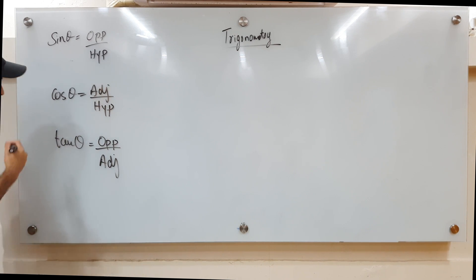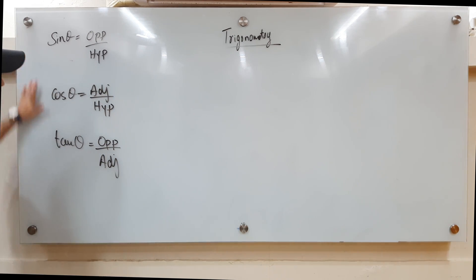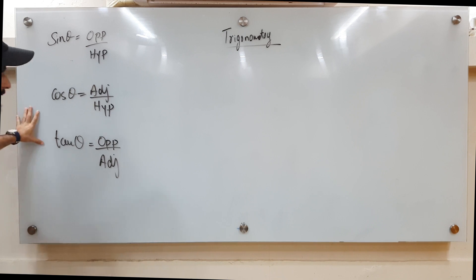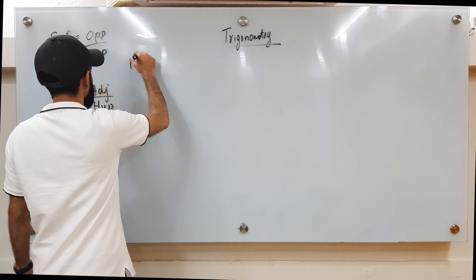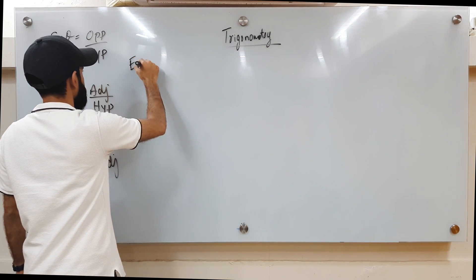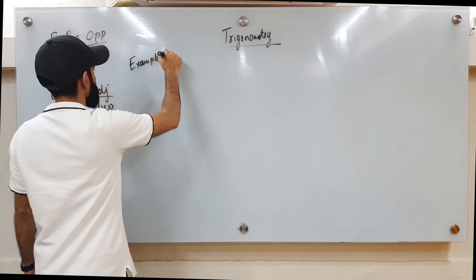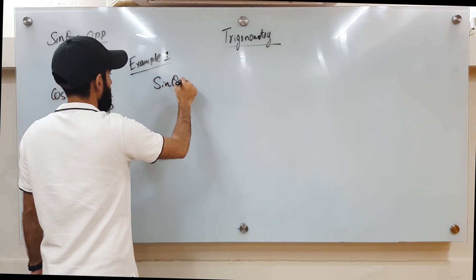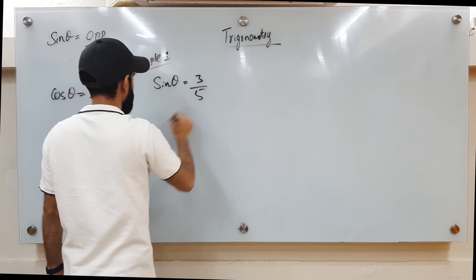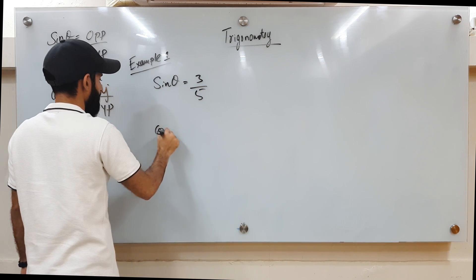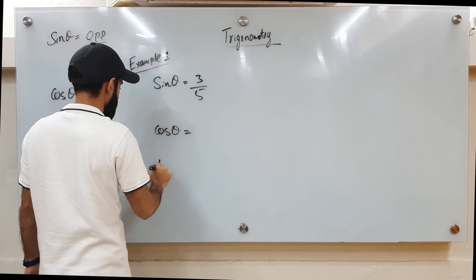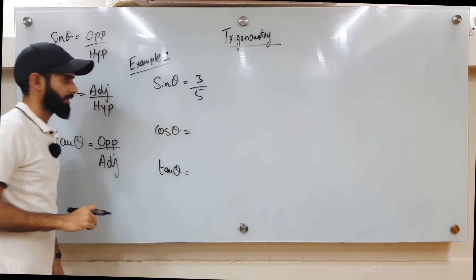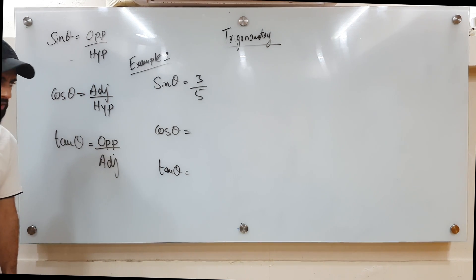So what's the application of these trigonometric functions in Ad Math? You may come across a question like this — sine theta equals 3 over 5, and the question asks you to figure out what cos theta is and what tan theta is.